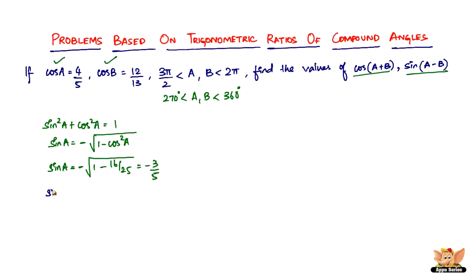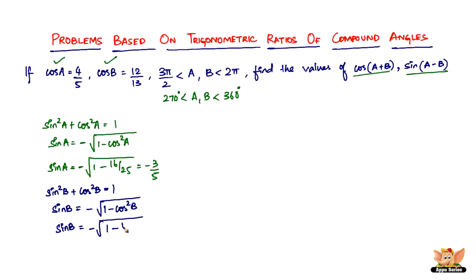Now let's find sine b. Using sine²b + cos²b = 1, sine b equals minus of square root of (1 − cos²b). Since cos b = 12/13, cos²b = 144/169, so sine b = −5/13. We've now found the values of sine a and sine b.